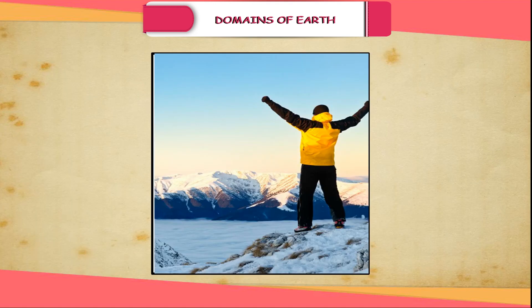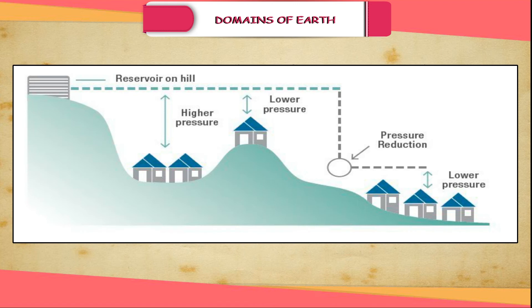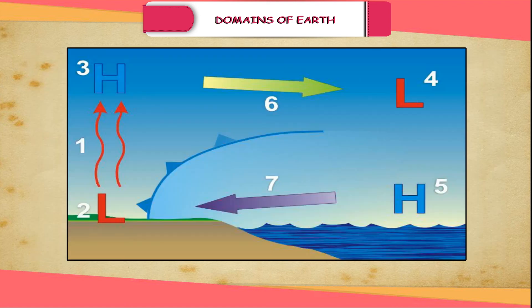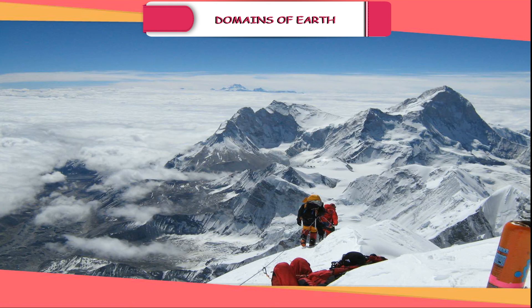The atmospheric pressure varies from place to place. Some areas experience high pressure and some areas low pressure. Air moves from high pressure to low pressure. Moving air is known as wind. The density of atmosphere varies with height. It is maximum at sea level and decreases rapidly as we go up. The climbers have to carry oxygen cylinders with them to be able to breathe at high altitudes. The temperature also decreases as we go upwards.